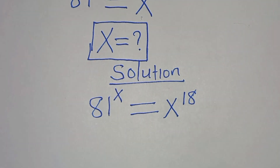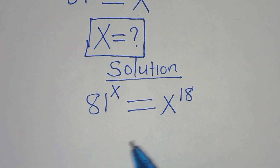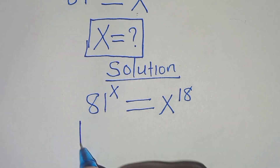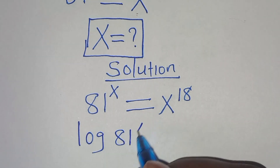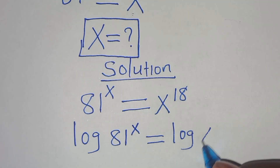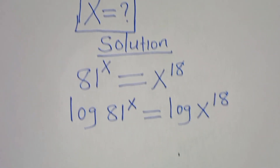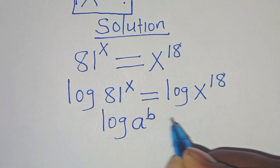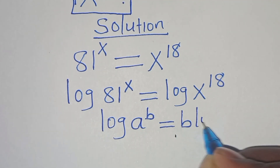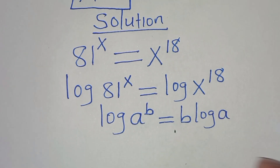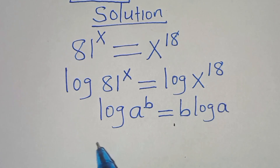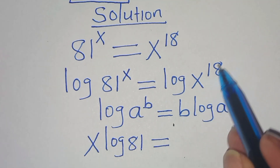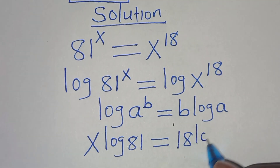We're going to solve this by applying two methods. Let's start with Method 1. We have 81 to the power of x equals x to the power of 18. Let's introduce a logarithm on both sides: log of 81 to the power of x equals log of x to the power of 18. This is in the form log(a^b) = b·log(a). Applying this power property, log 81 to the power of x becomes x·log 81, which equals 18·log x.